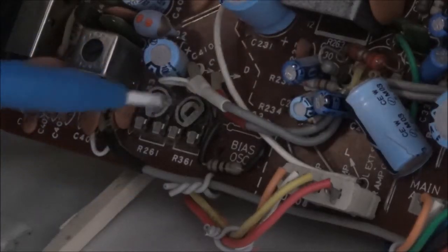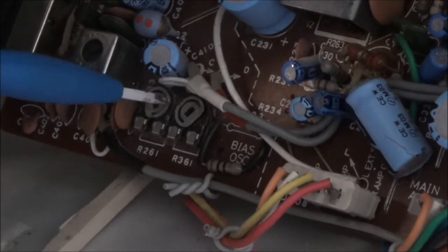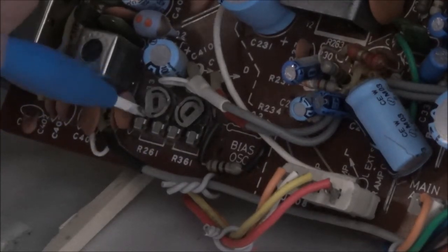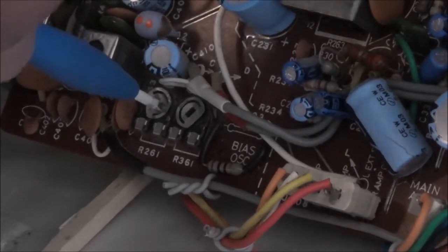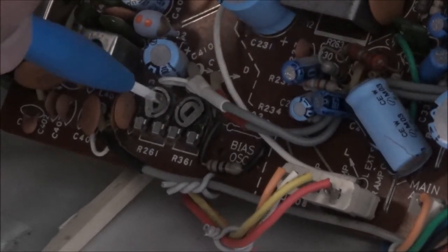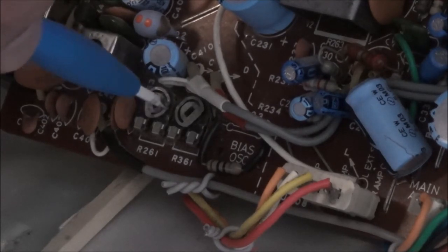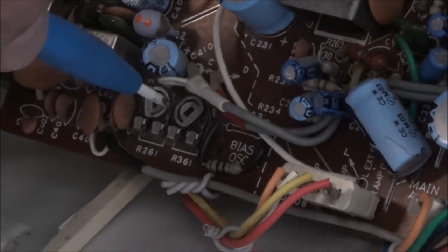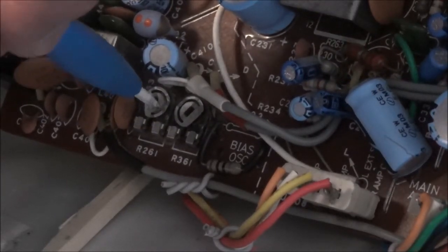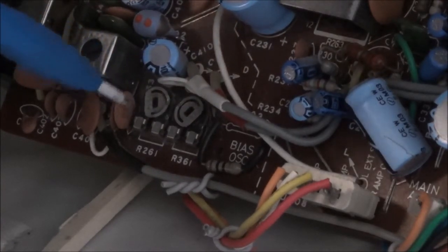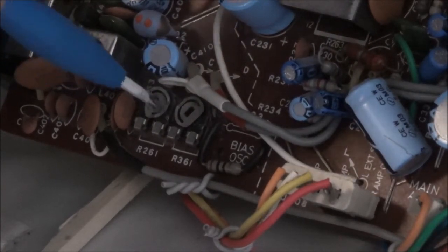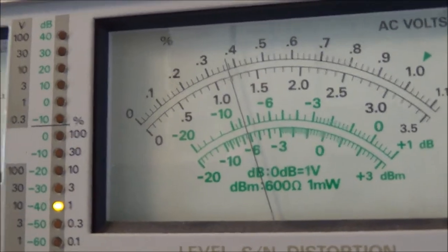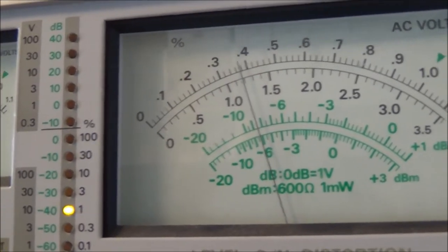All I do to make this adjustment is turn these potentiometers, this is R261 and R361. I like to use non-magnetic type of screwdrivers because a lot of times you use a metal screwdriver which is easier to turn, but then the moment you remove the screwdriver the reading is going to change. We're on the 10 millivolts scale and it is around 3.8 millivolts.